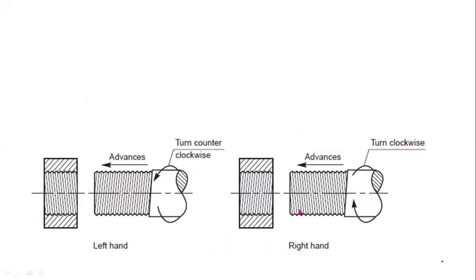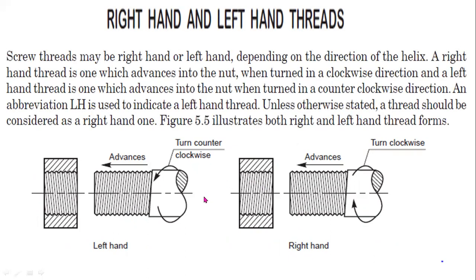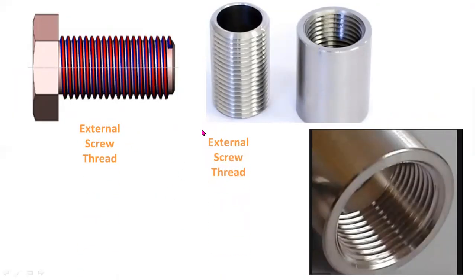This is a left-hand thread and this is a right-hand thread. Two threads may be right-hand or left-hand depending on the direction of the helix. A right-hand thread is one which advances into the nut when turned in a clockwise direction, and a left-hand thread is one which advances into the nut when turned in a counterclockwise direction. The abbreviation LH is used to indicate the left-hand thread. Unless otherwise stated, a thread should be considered as a right-hand one. This figure illustrates both right-hand and left-hand thread forms.